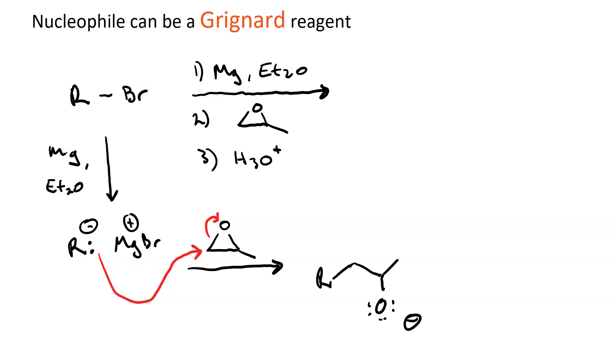And the final step, with the acid, just protonates the alkoxide. So we do a little proton transfer. And what we've done is we've installed an R group 1,2, or adjacent to our alcohol.